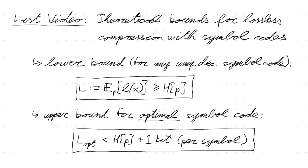In the last video, we proved theoretical bounds for lossless compression with symbol codes — both a lower and an upper bound. The lower bound states that the expected codeword length cannot be lower than the entropy of the distribution of symbols. The upper bound states that you can indeed come close to this lower bound: there always exists a uniquely decodable symbol code, a prefix code even, that reaches this lower bound up to at most one bit. For symbol codes, this is one bit per symbol.